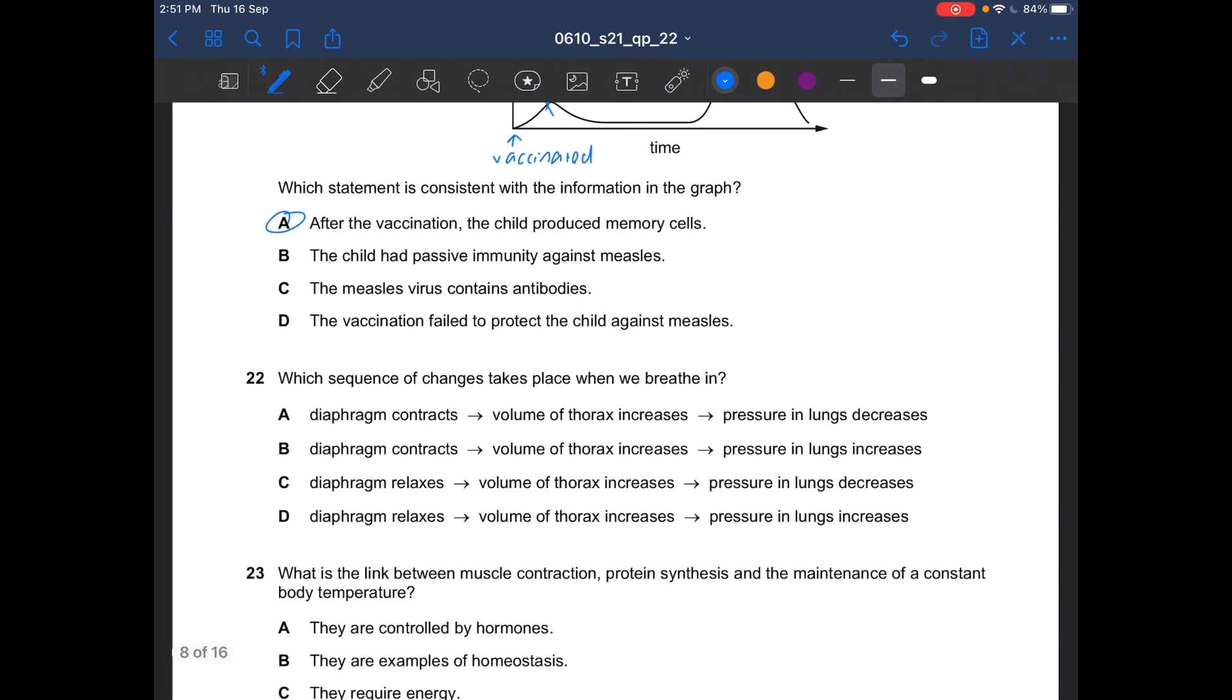Next question. Which sequence of changes takes place when we breathe in? When we breathe in, our diaphragm contracts. And hence, the volume of thorax increases, pressure in lung decreases. So the answer is A.